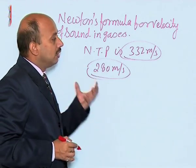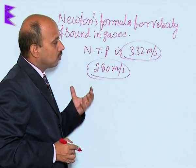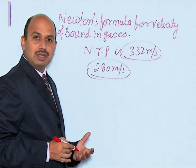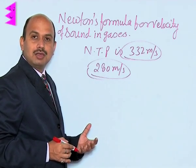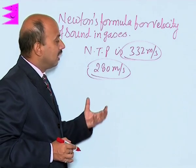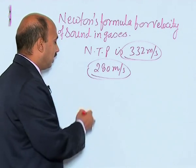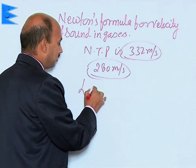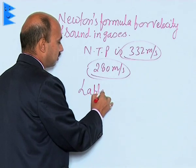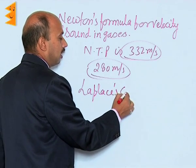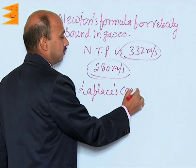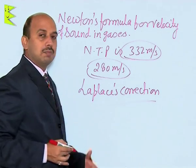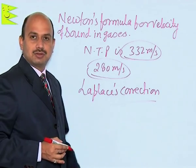Newton's assumption was not correct and there was a lot of error in the calculation of the speed. This correction was done by the scientist — this is called the Laplace correction. Let us now discuss Laplace correction.